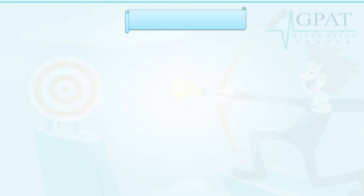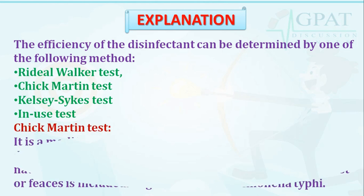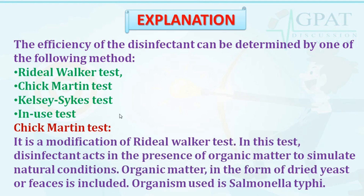So what is the Chick Martin test? The efficiency of a disinfectant can be determined by one of the following methods: Rideal-Walker test, Chick-Martin test, Kelsey-Sykes test, or in-use test. The Chick-Martin test is a modification of the Rideal-Walker test. In this test, the disinfectant acts in the presence of organic matter to simulate natural conditions. Organic matter in the form of dried yeast or feces is included, and the organism used mainly is Salmonella typhi.